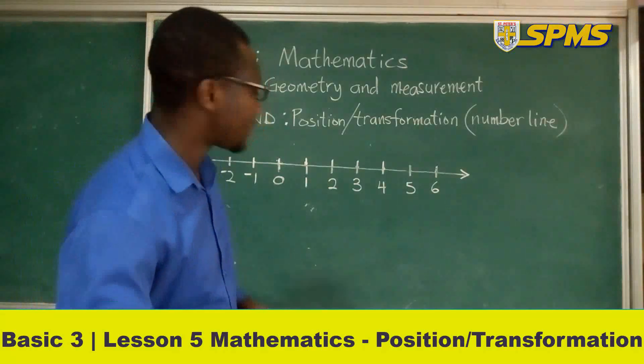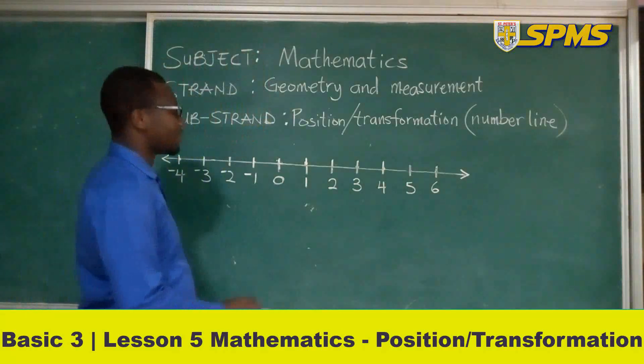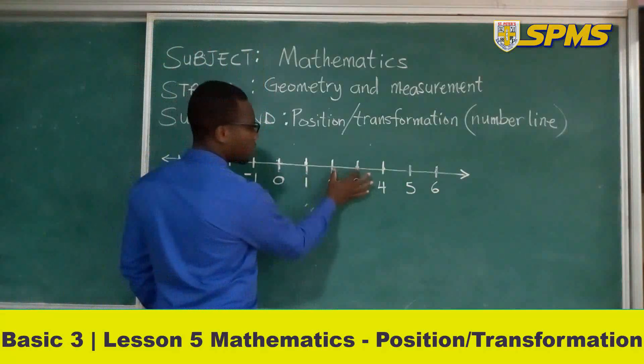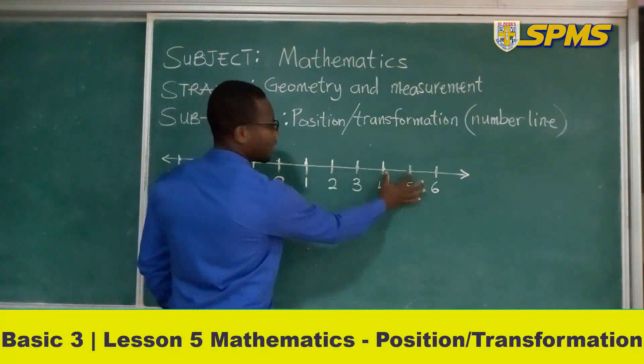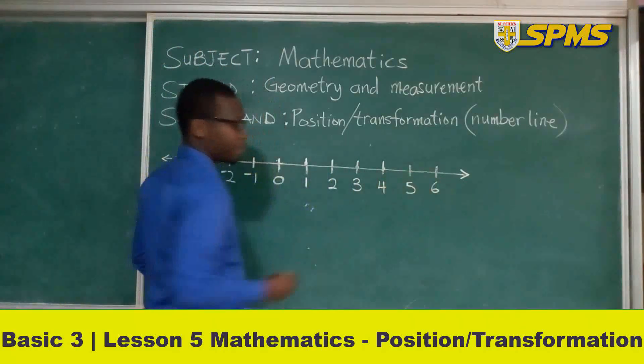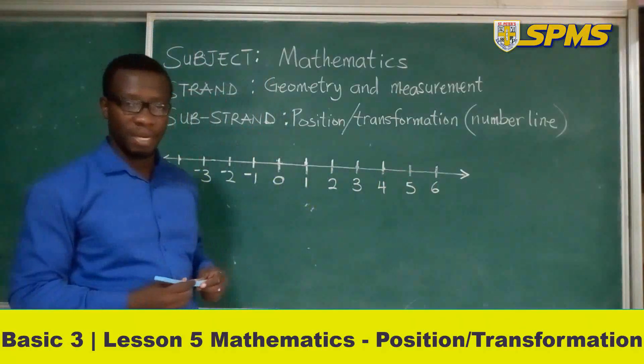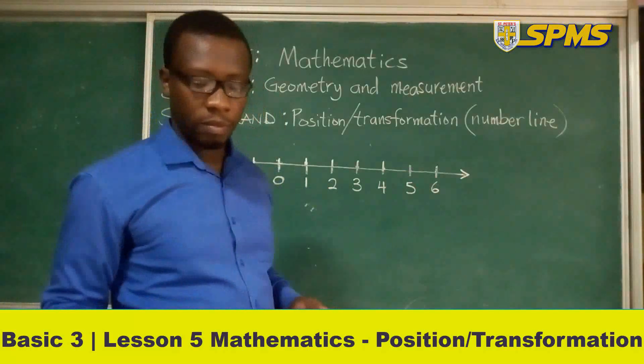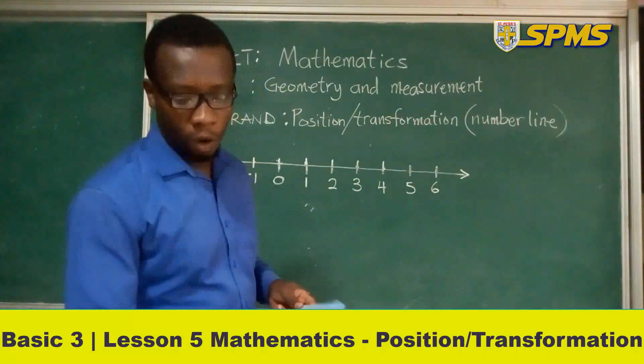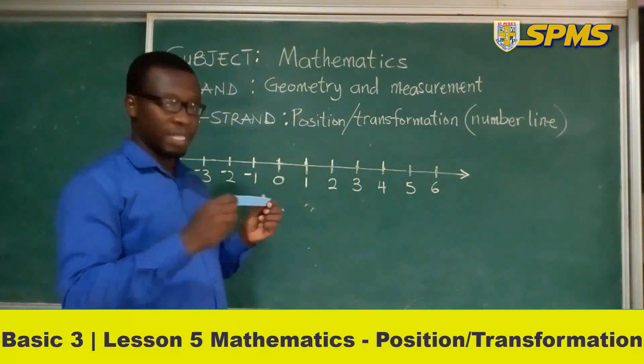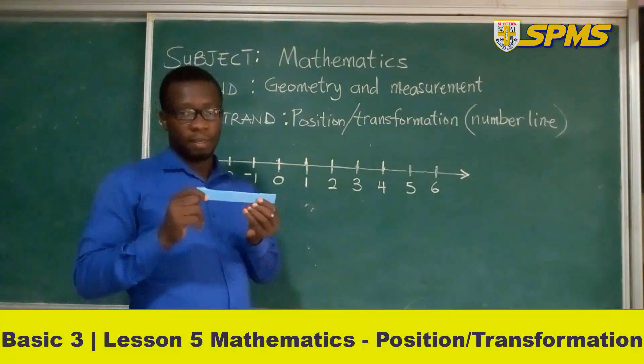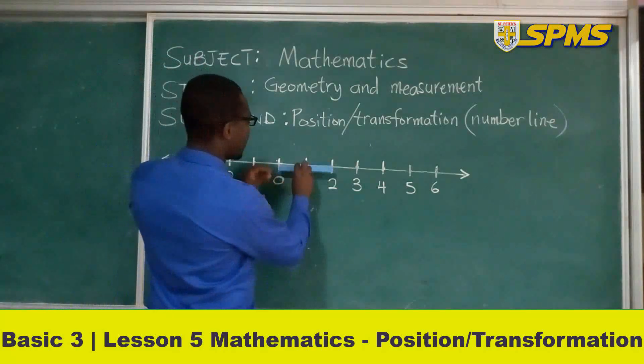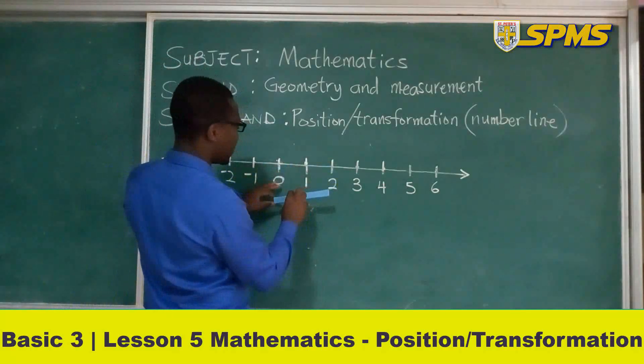Let's note that the distance between two numbers are the same. And how can we determine that? We can use the ruler to determine that, or we can use an object to determine it. So let's determine the distance between 0 and 2.